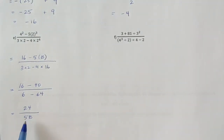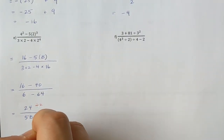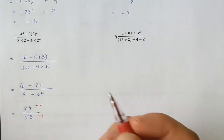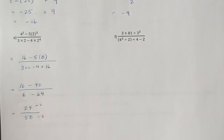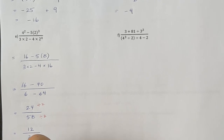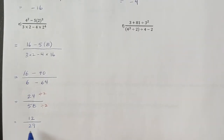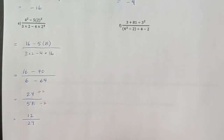Dividing the top and bottom by 2, I get 12 divided by 29. I can't reduce that any further because 29 is a prime number. That's the end of that question.